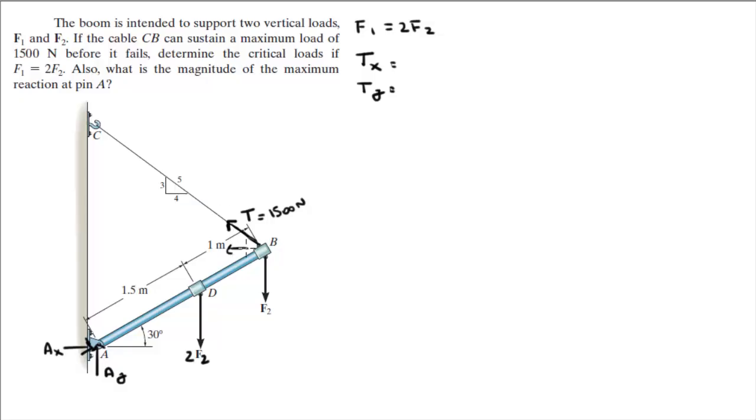If I found this component, which is TX, and this component, which is TY. So TX equals 1500 times 4 over 5, 4 over this 5 that they gave us on this triangle, and it comes out to be 1200 Newtons.